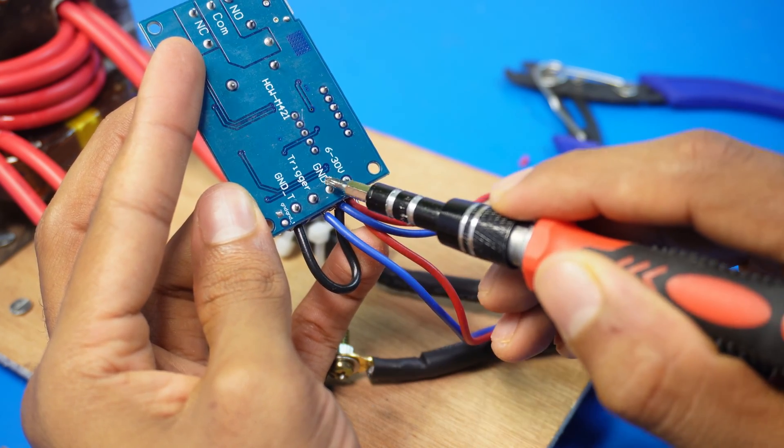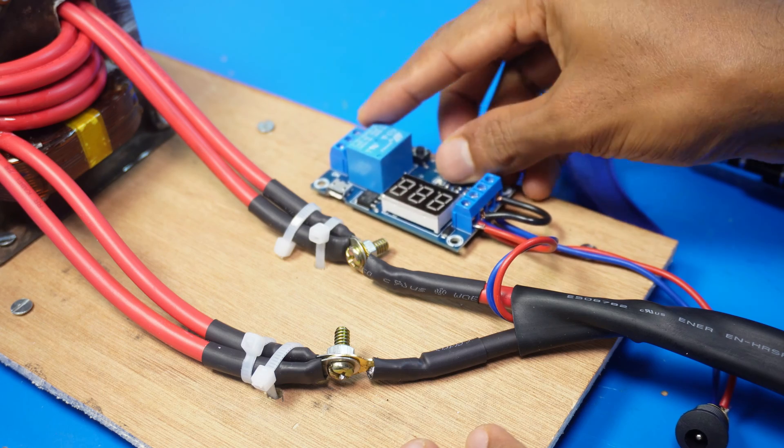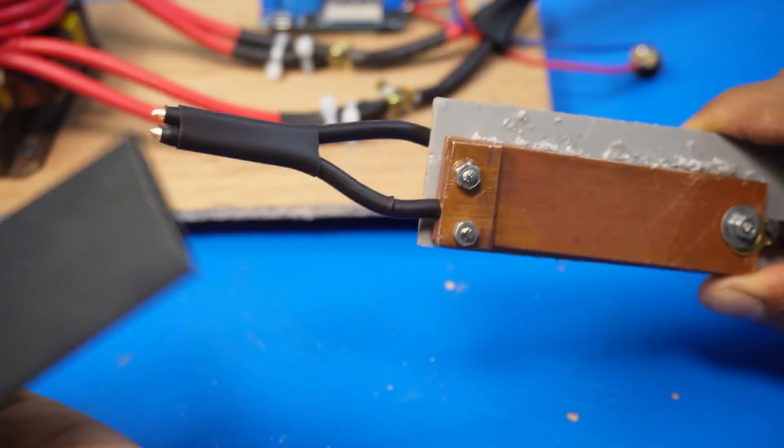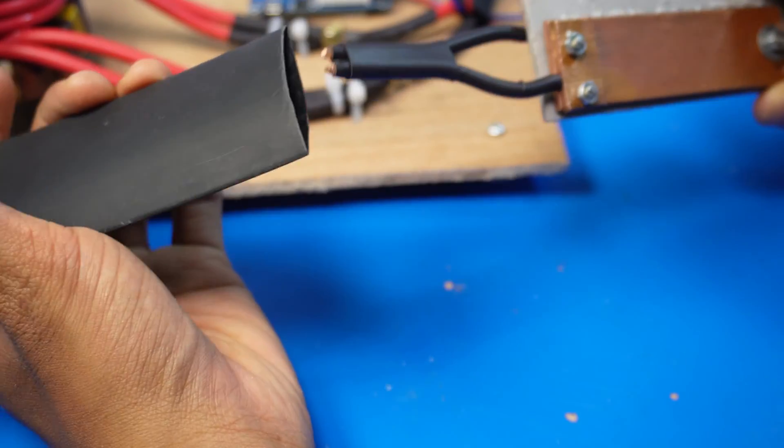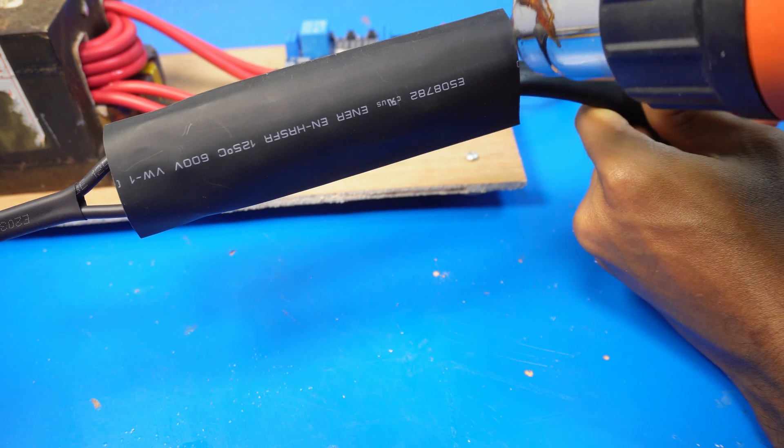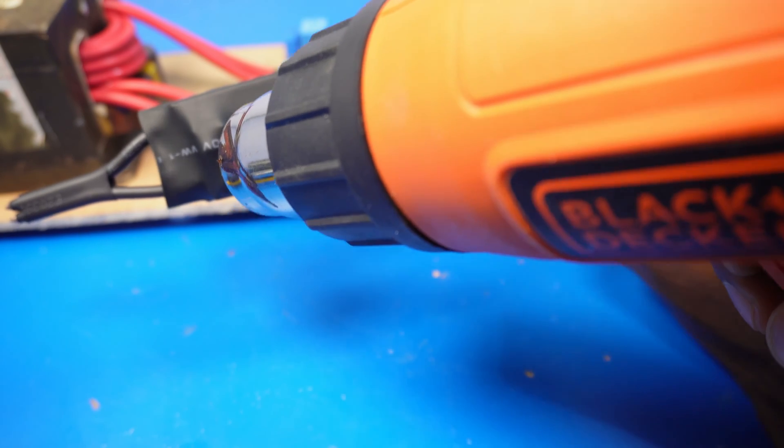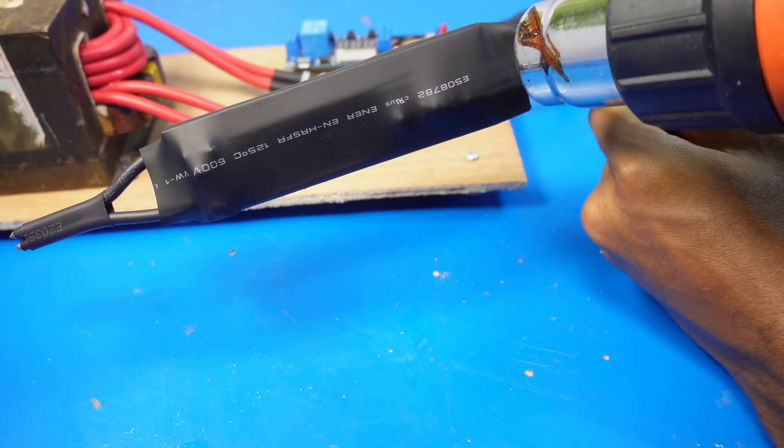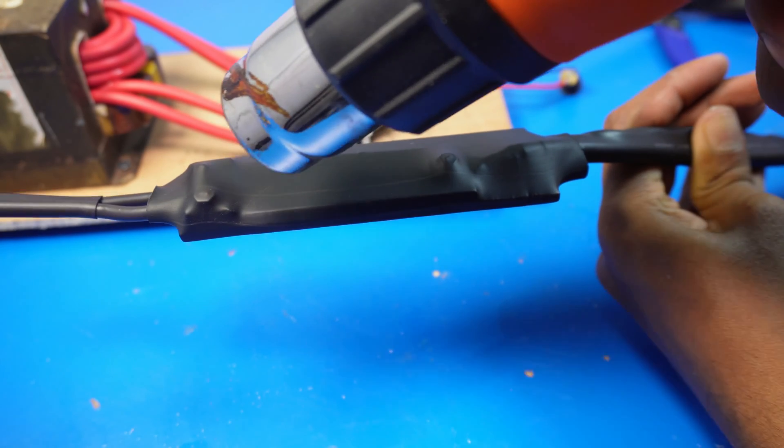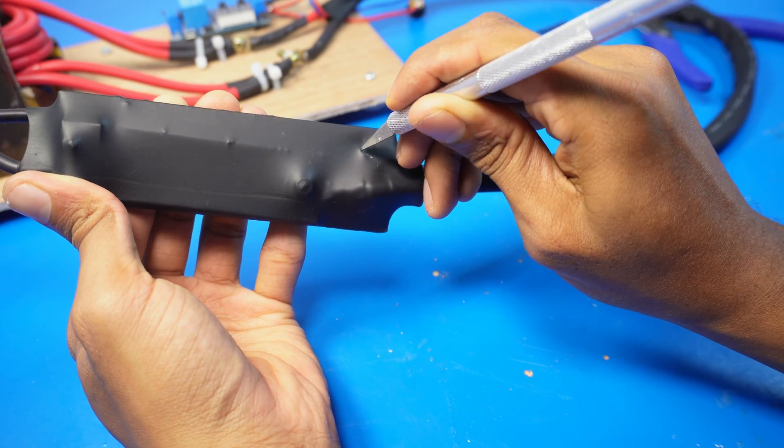Next, I attach the timing module to the plywood using double-sided tape. I added heat shrink tubing to the copper strips to avoid getting shocked while using the welder. I made sure to add two layers of heat shrink tubing for extra safety. I cut out the tubing where the trigger switch is located. I positioned the trigger switch for comfortable use.